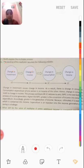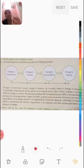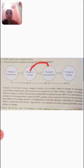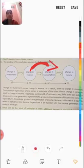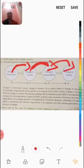When income changes, consumption also changes. If income increases we consume more; if income decreases, consumption also decreases. So there is a direct relationship: first, investment changes income; then income changes consumption; and when consumption changes, income changes again.